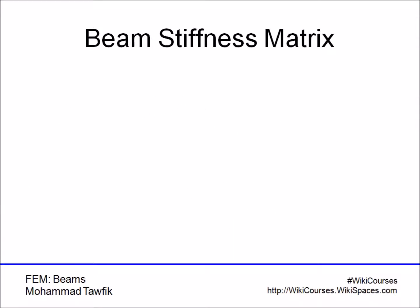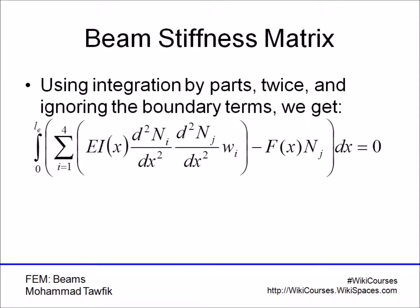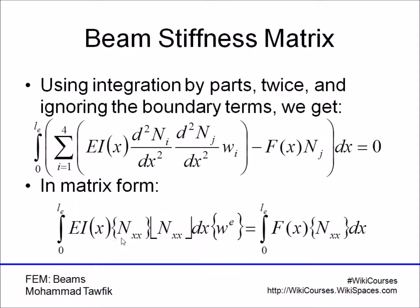Let me show how the general form looks after applying integration by parts. The boundary terms appear outside the integration and are supposed to go to the right-hand side, but we will delay this until we write down the whole matrix. We get the second derivative of one shape function multiplied by the second derivative of another shape function. In matrix form, this is a column vector multiplied by a row vector, both containing the second derivatives. The right-hand side is the integration of the load f multiplied by the shape function N — note that it should be N, not Nxx; that was a typo.